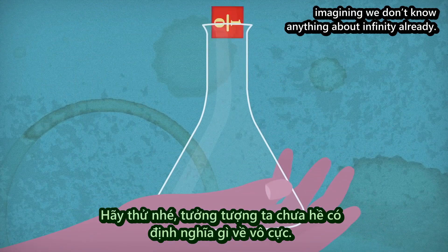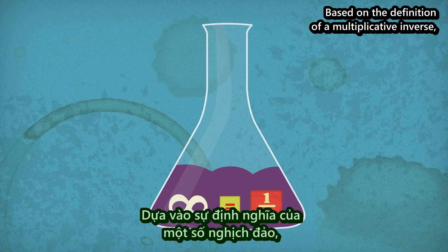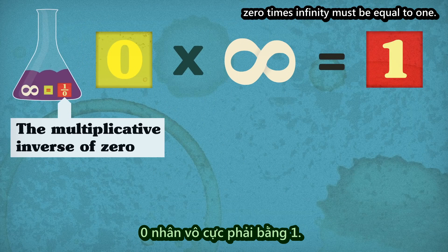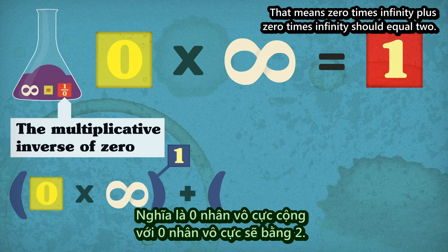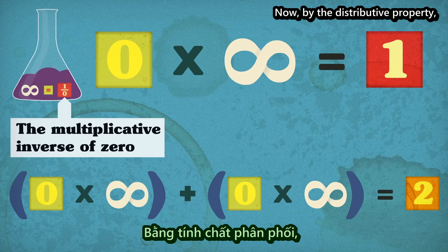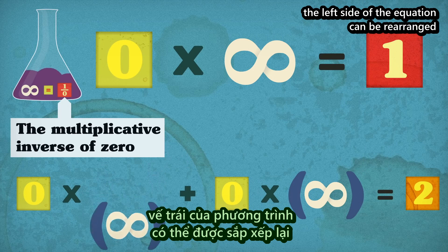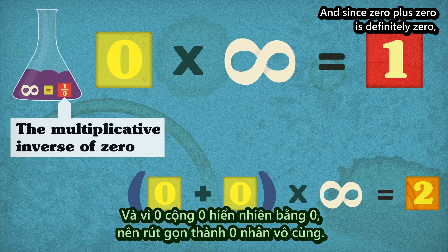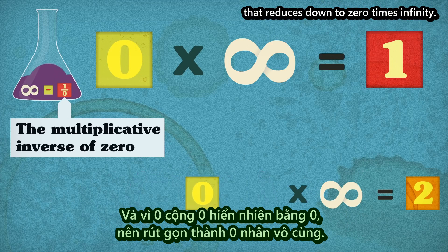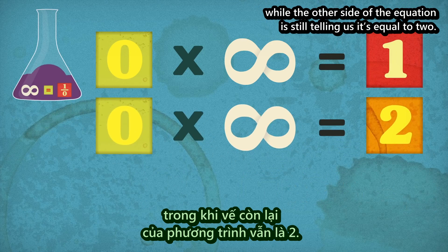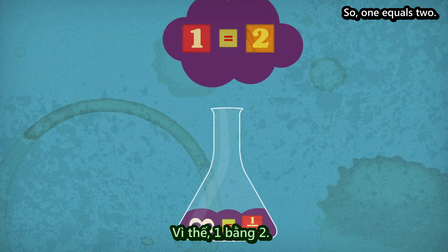Let's try it, imagining we don't know anything about infinity already. Based on the definition of a multiplicative inverse, 0 times infinity must be equal to 1. That means 0 times infinity plus 0 times infinity should equal 2. Now, by the distributive property, the left side of the equation can be rearranged to 0 plus 0 times infinity. And since 0 plus 0 is definitely 0, that reduces down to 0 times infinity. But we've already defined this as equal to 1, while the other side of the equation is still telling us it's equal to 2. So, 1 equals 2.